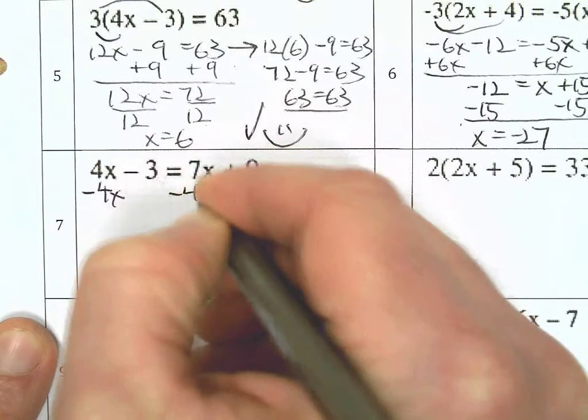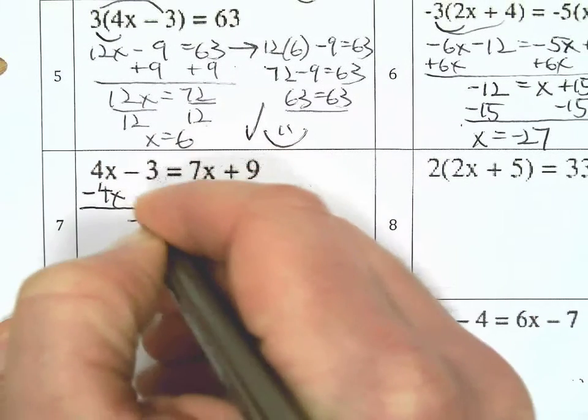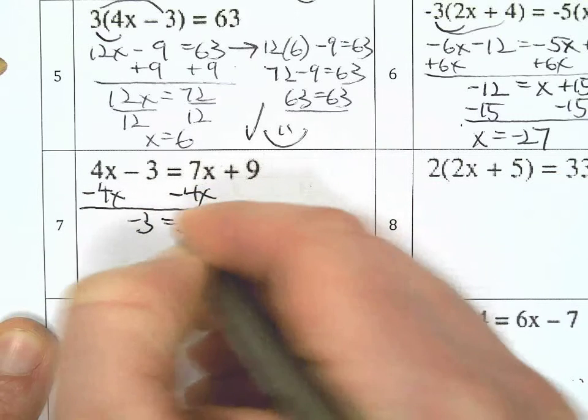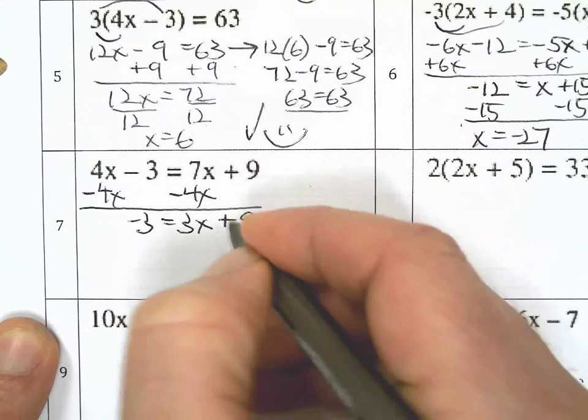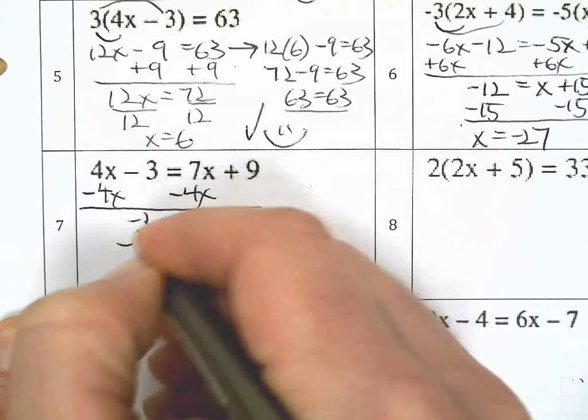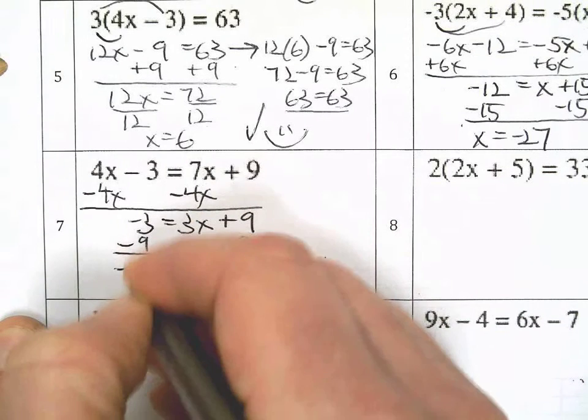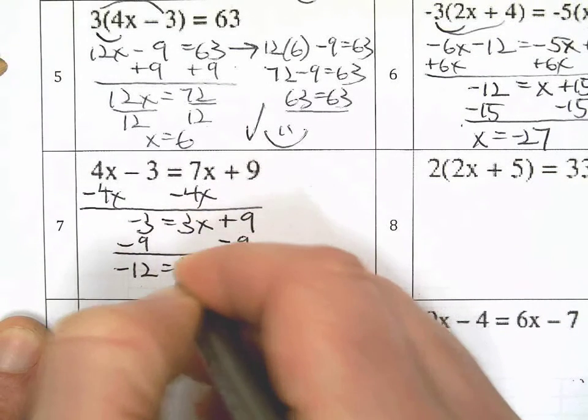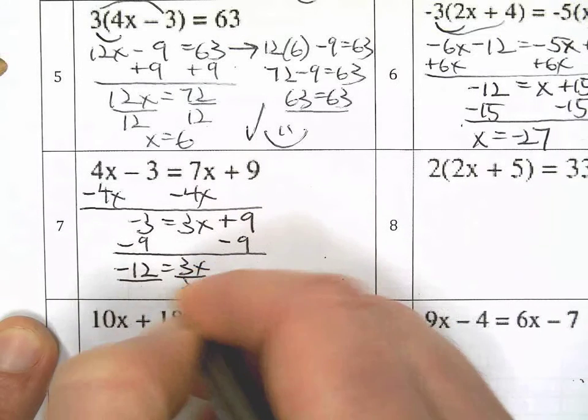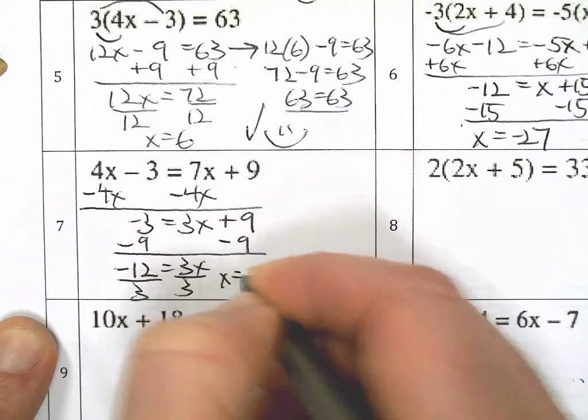Negative 4x. Sticking with my strategy of starting with the x but working to keep it positive. Just like in life, work to keep it positive. Divide both sides by 3. I get x equals negative 4.